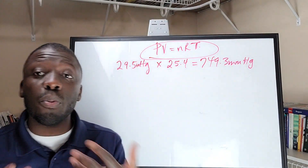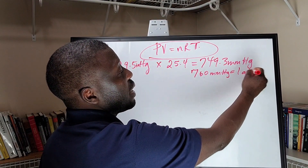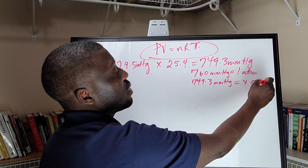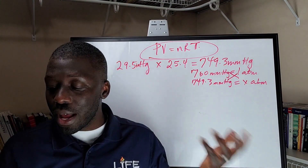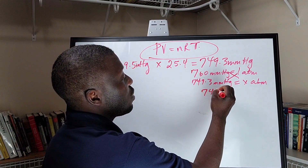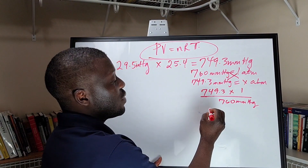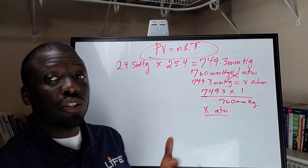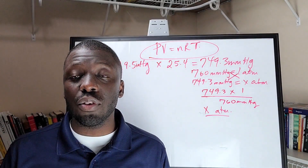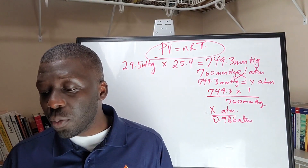Cross multiplication setups or proportion setups involve where you state what you know. You know 760 millimeter mercury is equal to 1 atmosphere, and 749.3 millimeter mercury is equal to x atmosphere. So you basically cross multiply and you solve for x. In this case, we take 760 and put it in the denominator, so it would be 749.3 times 1 divided by 760 millimeter mercury. This gives us the pressure in atmosphere — 0.986 atmosphere.